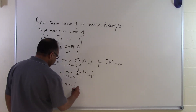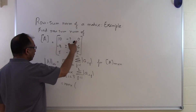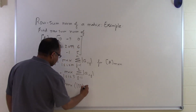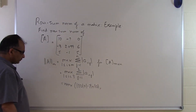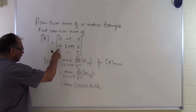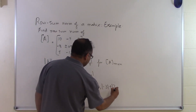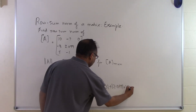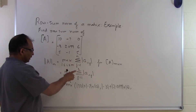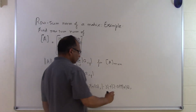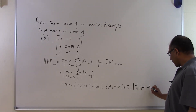The max is taken with i equal to 1, which is the first row: we take the sum of absolute values of all elements, so it will be 10 plus absolute value of minus 7 plus absolute value of 0. Then with i equal to 2, the second row: absolute value of minus 3 plus absolute value of 2.099 plus absolute value of 6. Then i equal to 3, the third row: absolute value of minus 1 plus absolute value of 5.